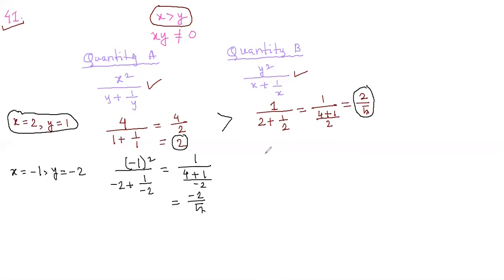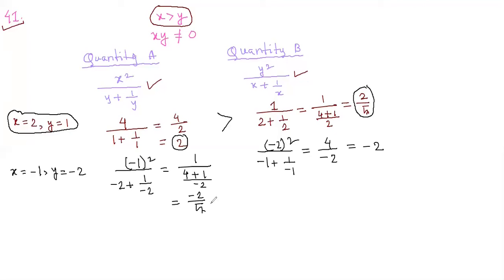For quantity B with x equals minus 1 and y equals minus 2: y squared is minus 2 squared, which is 4. And x plus 1 over x is minus 1 plus 1 over minus 1, which is minus 1 minus 1, giving minus 2. So quantity B equals 4 times minus 2, which is minus 2. Since minus 2 over 5 is greater than minus 2, quantity A is still greater than quantity B.